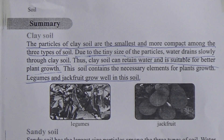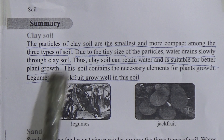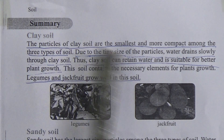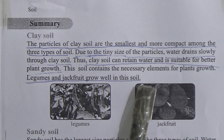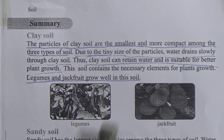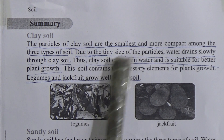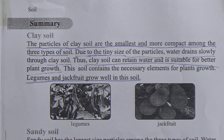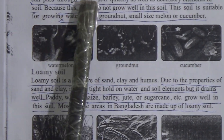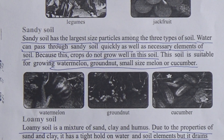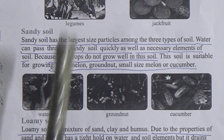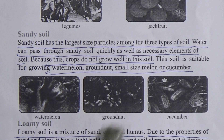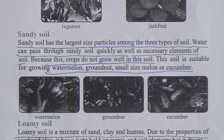Now we can easily find out the differences between sandy, loamy, and clay soil. The particles of clay soil are the smallest and most compact, while sandy soil has the largest size particles. Due to the tiny size of particles, water drains slowly through clay soil, whereas water passes through sandy soil quickly. Legumes and jackfruit grow well in clay soil, and watermelon, groundnut, and cucumber grow well in sandy soil.